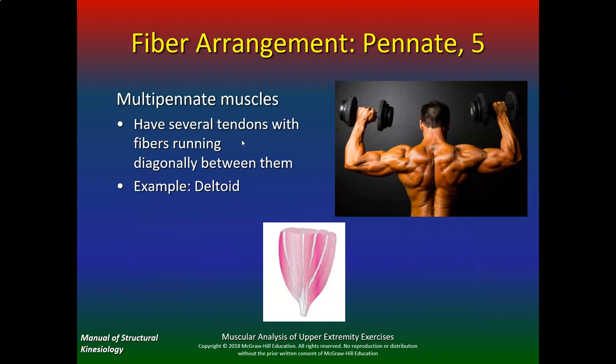Multipennate muscles have several tendons with fibers running diagonally. The deltoid is a great example of multipennate.